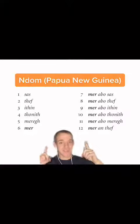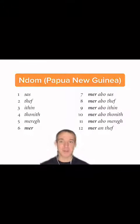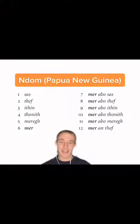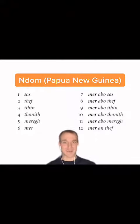Here's a base 6 system from a language called Ndome, spoken in Papua New Guinea, where the word for 7 is literally 6 plus 1, and 12 is literally 6 times 2.